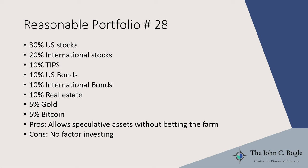Here's another reasonable portfolio: 30 percent U.S. stocks, 20 international stocks, 10 TIPS, 10 U.S. bonds, 10 international bonds, 10 real estate, 5 percent gold, and 5 percent bitcoin. The pros: if you want a little money in speculative assets, this portfolio has that without betting the farm on them. I'm okay with that — it's reasonable. The downside is this one doesn't happen to have any factor investing.